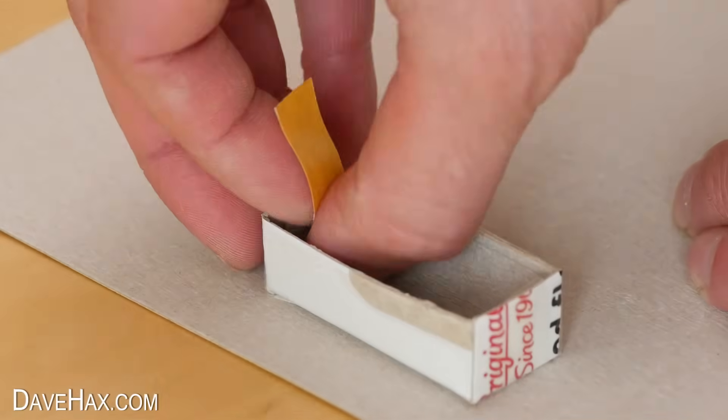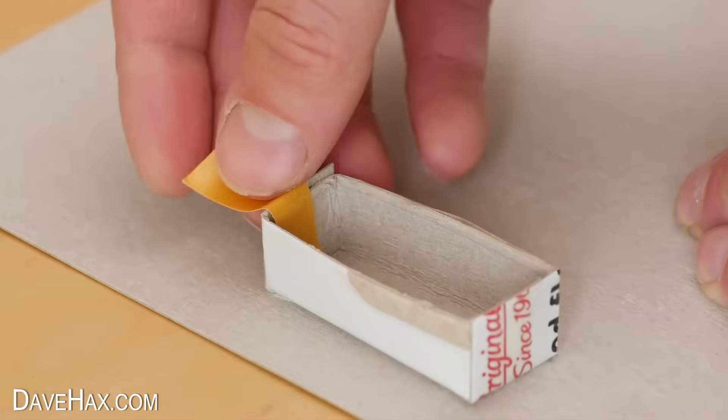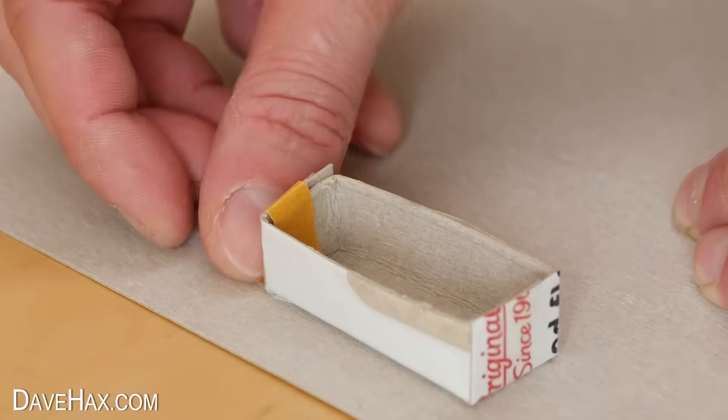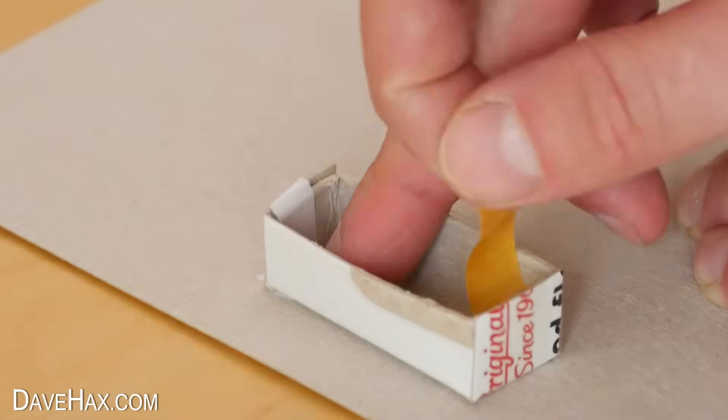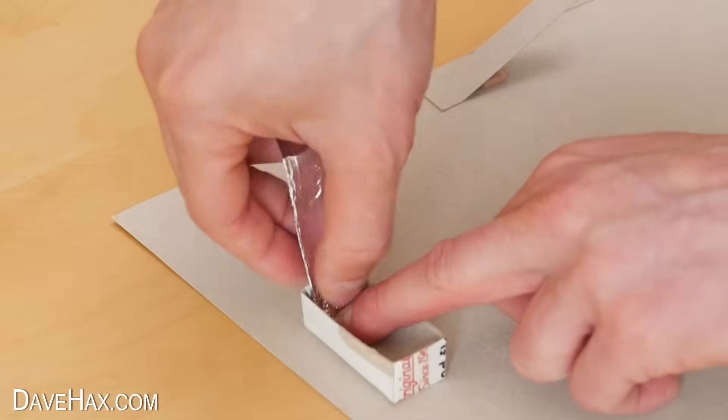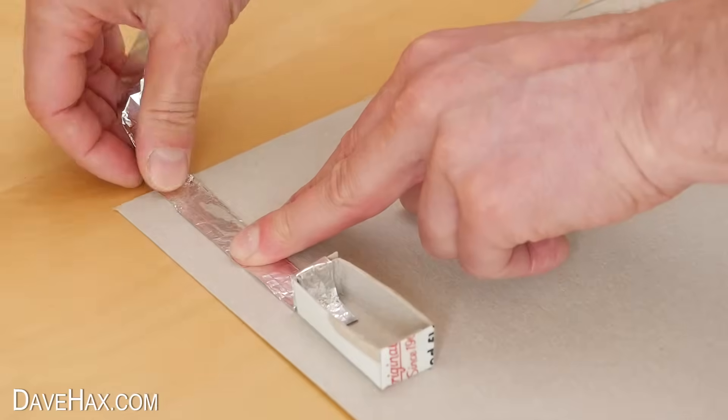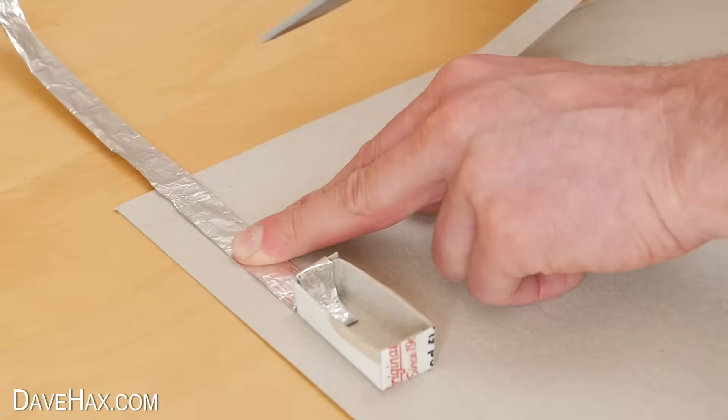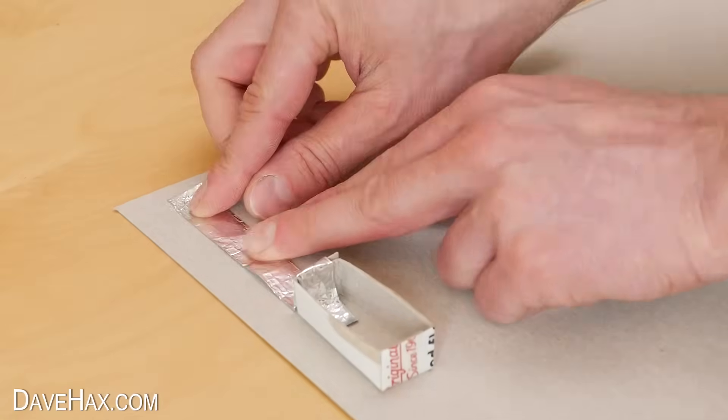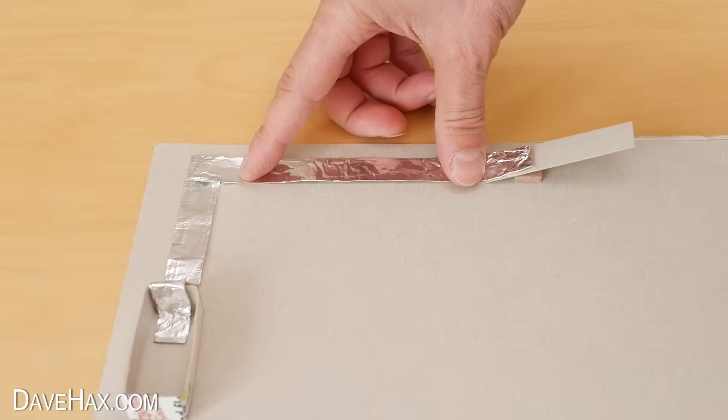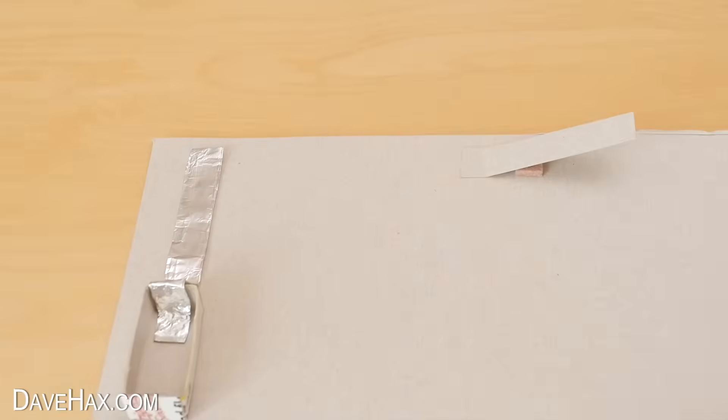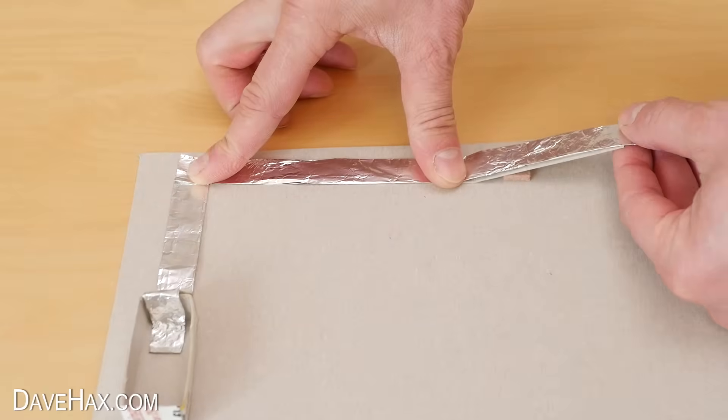The first thing we need to do is run some double-sided sticky tape inside and over the edge of the battery holder. Then stick some foil over the tape and up the board. Cut off the excess and you can see this piece is slightly too short to go over the switch so we'll use this piece later and use a new length here instead.